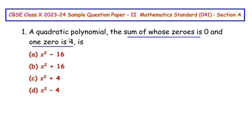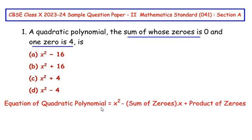So let me write the general form of quadratic polynomial first. The equation of quadratic polynomial is x squared minus sum of zeros times x plus product of zeros.